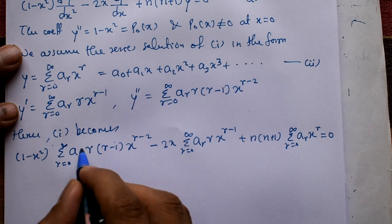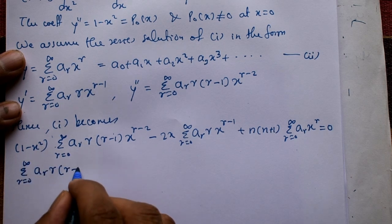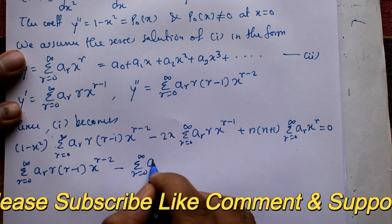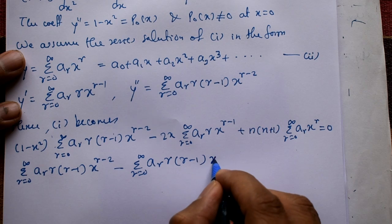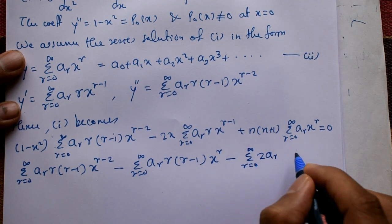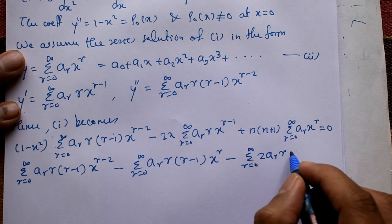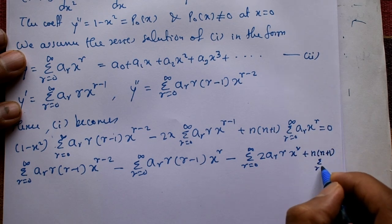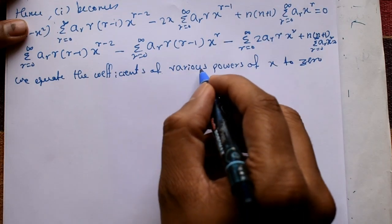Expanding the first bracket: 1 times the summation gives Σ aᵣ·r·(r-1)·x^(r-2), and minus x² times the summation gives Σ aᵣ·r·(r-1)·x^r (since x² · x^(r-2) = x^r). The second term becomes Σ 2aᵣ·r·x^r. The last term remains n(n+1)·Σ aᵣ·x^r = 0.